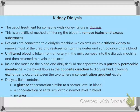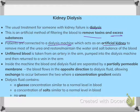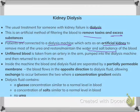Kidney dialysis is an artificial method of filtering the blood to remove toxins and excess substances. The patient is connected to a dialysis machine which acts as an artificial kidney. It removes most of the urea and restores the water and salt balance of the blood. Unfiltered blood is taken from an artery in the arm, pumped into the dialysis machine, and then returned to a vein in the arm. Inside the machine, the blood and dialysis fluid are separated by a partially permeable membrane.